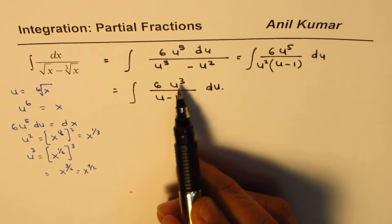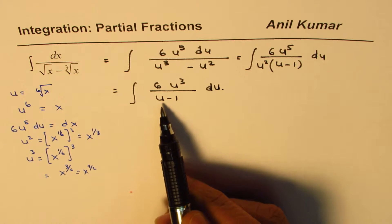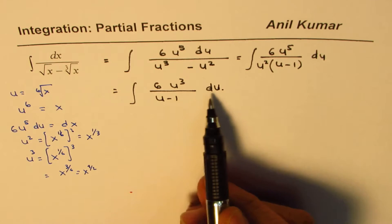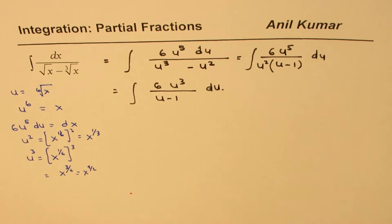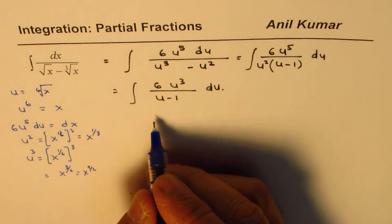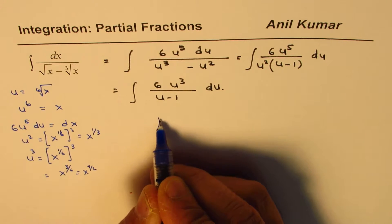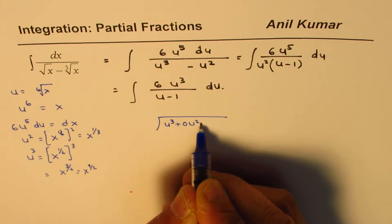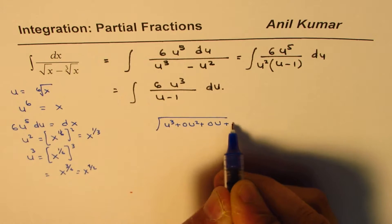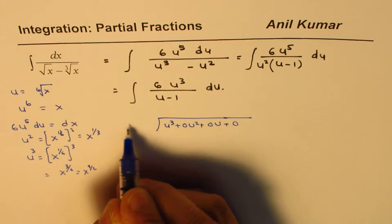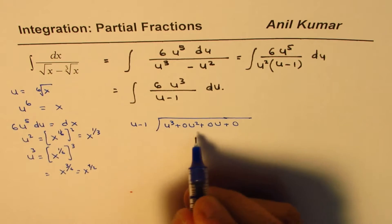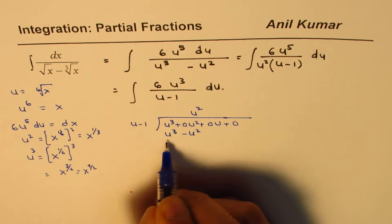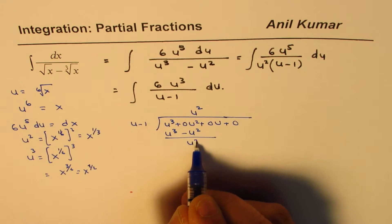So now you can see that the denominator degree is lesser. So we need to divide and write this into a sum of fractions. So let's do that division part. So the inside function is u cube. So we have u cube plus 0 u square plus 0 u plus 0. And this function is u minus 1. So it goes u square times. You get u cube minus u square. And that gives you u square plus 0 u.